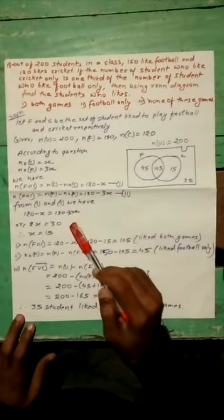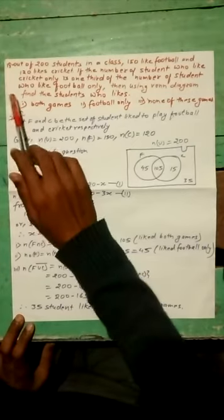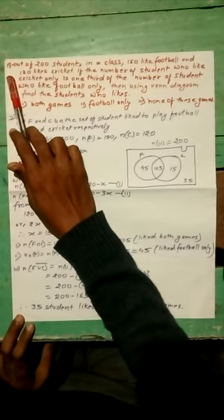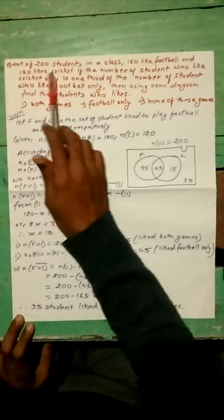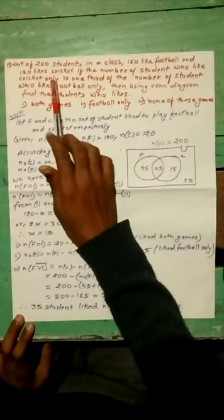This is the first question in the sixth chapter that I am going to tell you about. Question number 18 is that out of 200 students in a class, 150 like football and 120 like cricket.